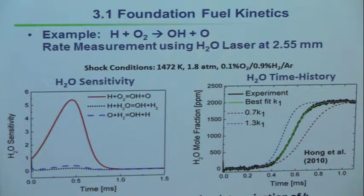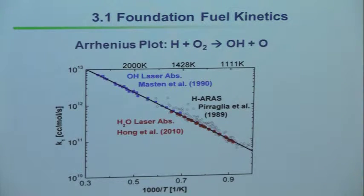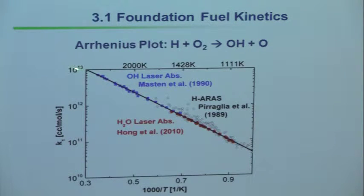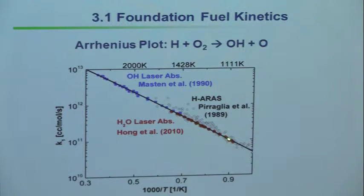In this mixture, once the reaction proceeds — with the extra hydrogen — the formation of water follows directly with this reaction. If we plot these data on an Arrhenius diagram, on a semi-log plot of rate coefficient versus 1/T, one student from around 1990 got results by measuring OH directly, shown in blue. Then we had a new idea for measuring water and get the red points — that's a new student 20 years later.